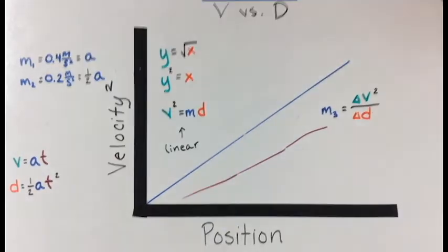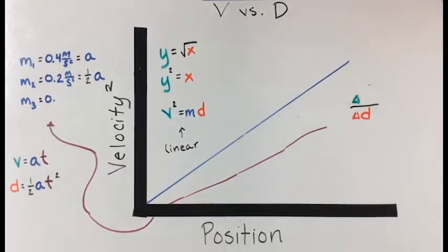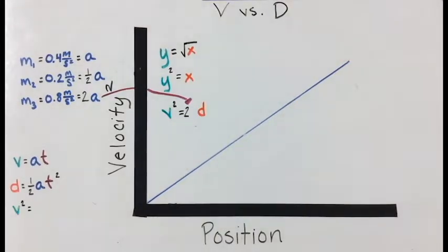The slope from our data was 0.8 meters per second squared. This value is twice the acceleration we found from our first graph. This gives us our third and final kinematic equation. The square of the velocity is equal to 2 times the acceleration multiplied by the position.